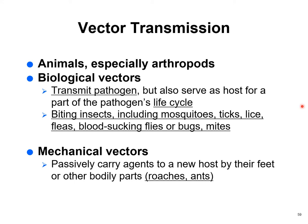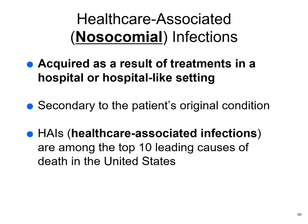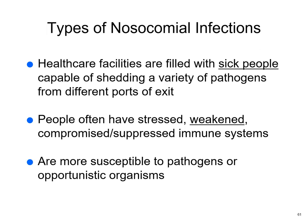Mechanical vectors don't carry the disease themselves but walk over germs and then walk on your food — cockroaches and ants are examples. Nosocomial infections are hospital-acquired infections and are among the top 10 leading causes of death in the United States. People go to the hospital and catch something there because hospitals are full of sick people, and patients are often weak, stressed, and immunocompromised — making them more susceptible.